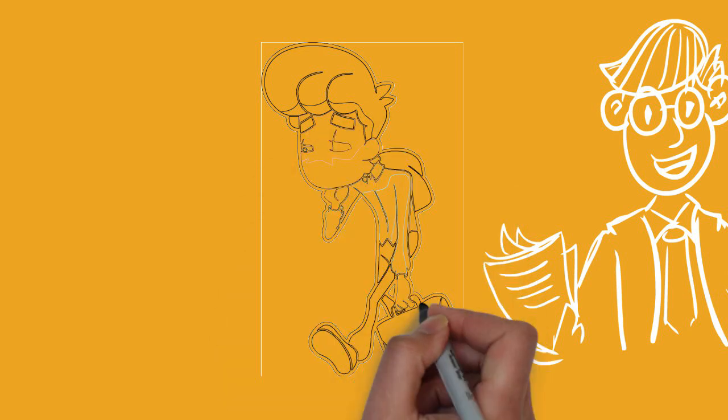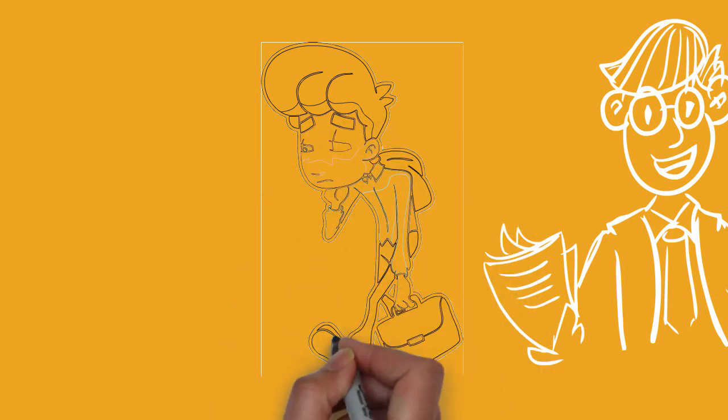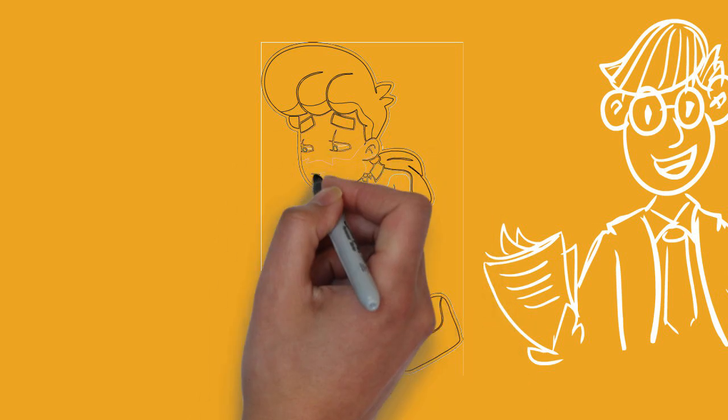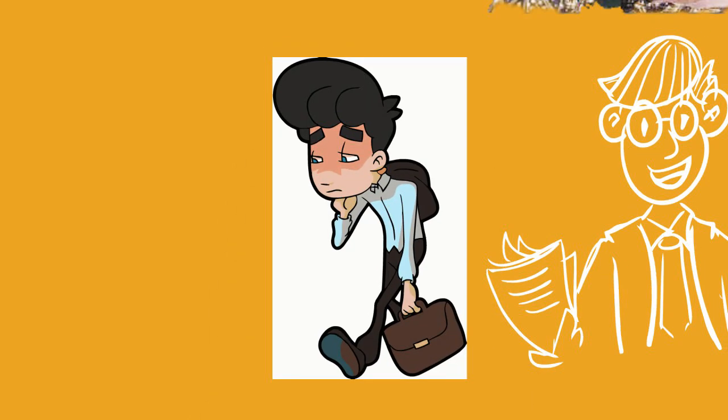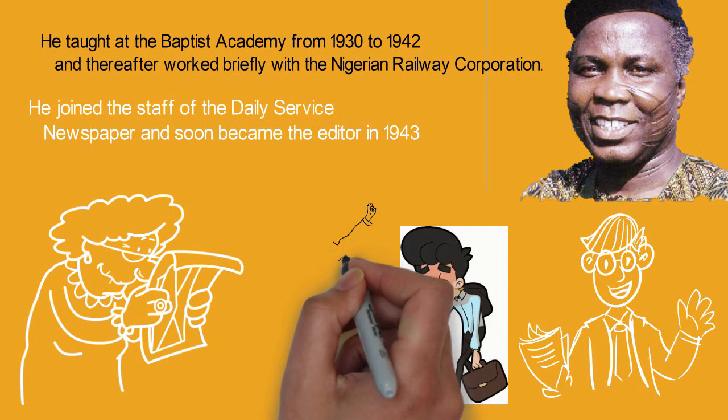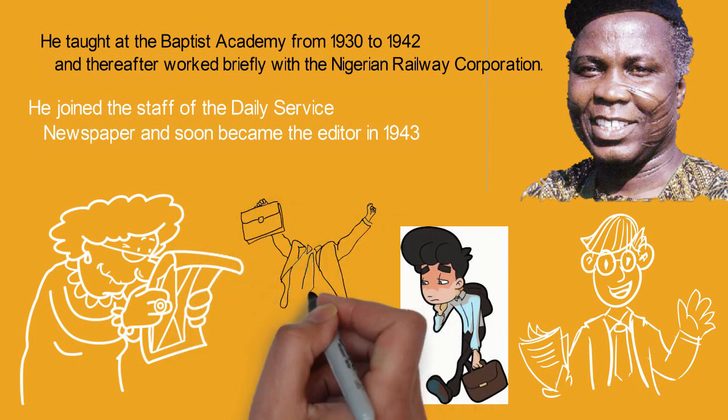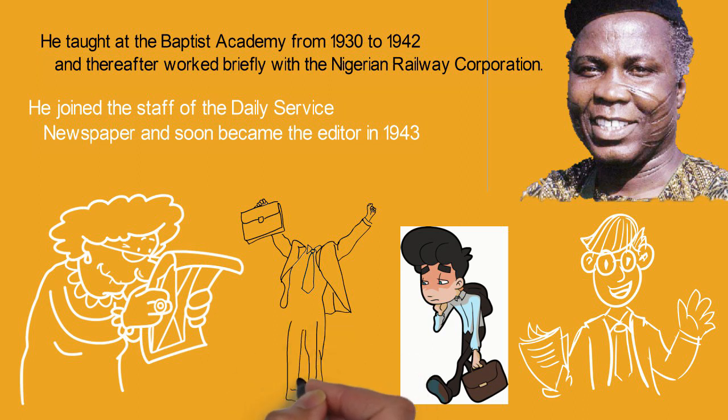As the deputy leader of the Action Group party, he did not serve in the regional western region government headed by the premier Awolowo, but was the Action Group parliamentary leader, leader of opposition in the House of Representatives of Nigeria. At a federal level, he served as Minister of Health and later Minister of Communications and Aviation.